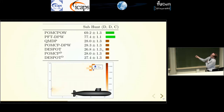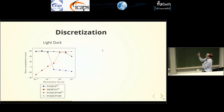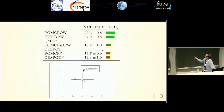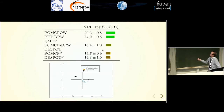PFT and POMCPOW are needed to solve the subhunt problem well. We tried all discretization bin sizes across a range — for light dark, POMCP works in one region of bin sizes but not another, while DESPOT behaves the opposite way. For the subhunt problem there's no discretization that works. The VDP tag problem has continuous state, action, and observation spaces, and there POMCPOW and PFT DPW do best.